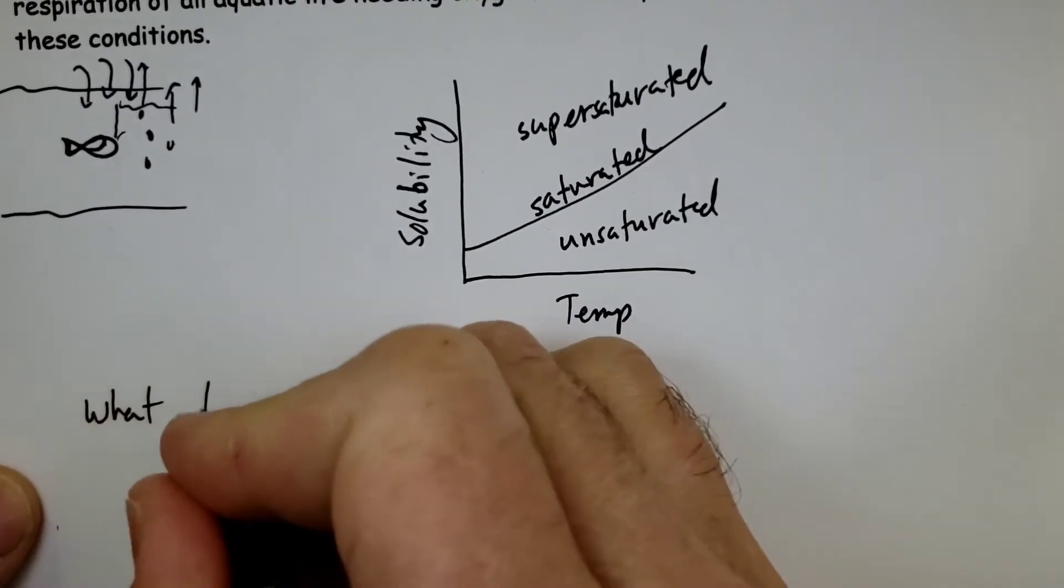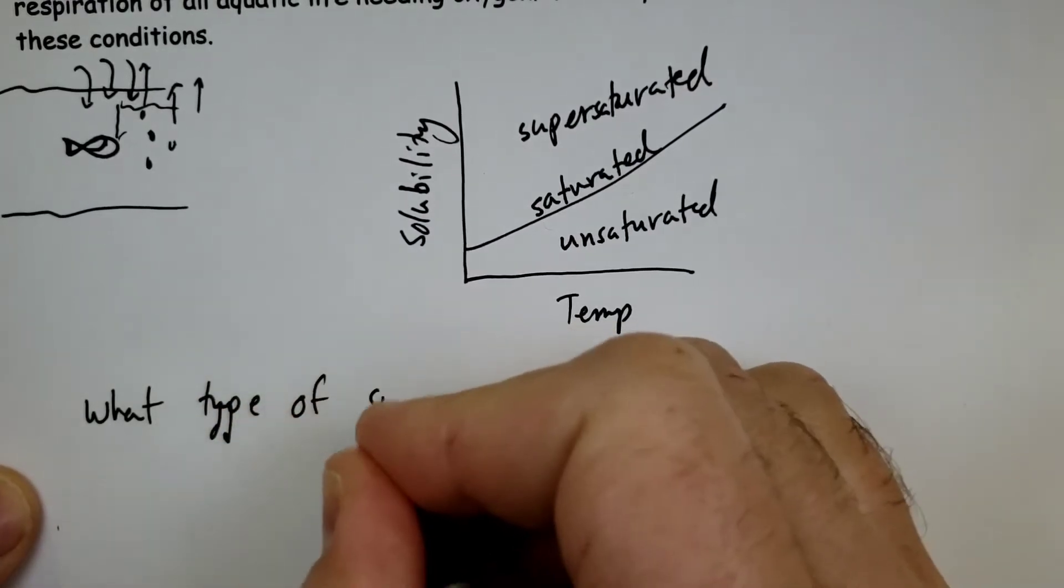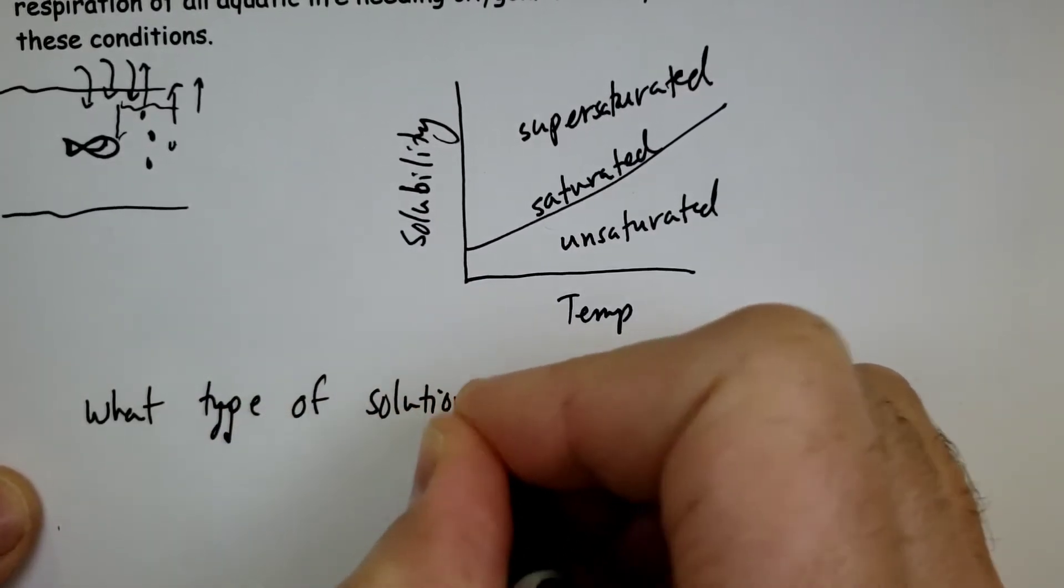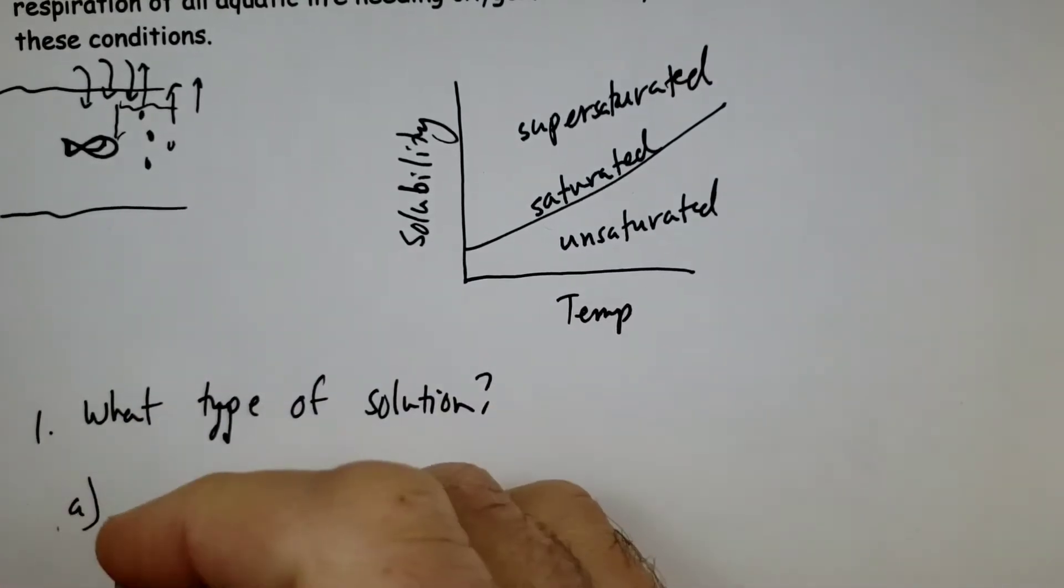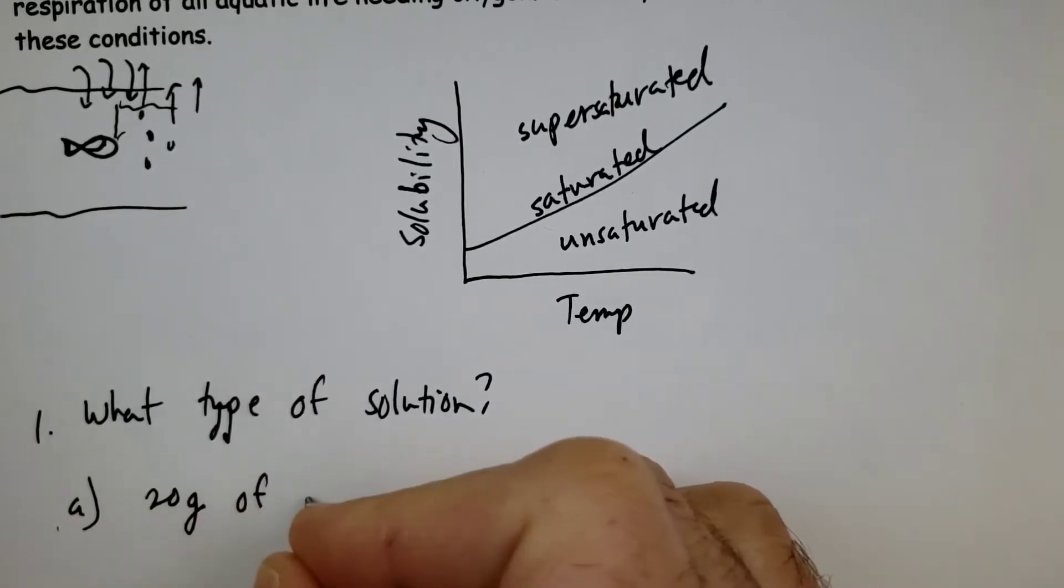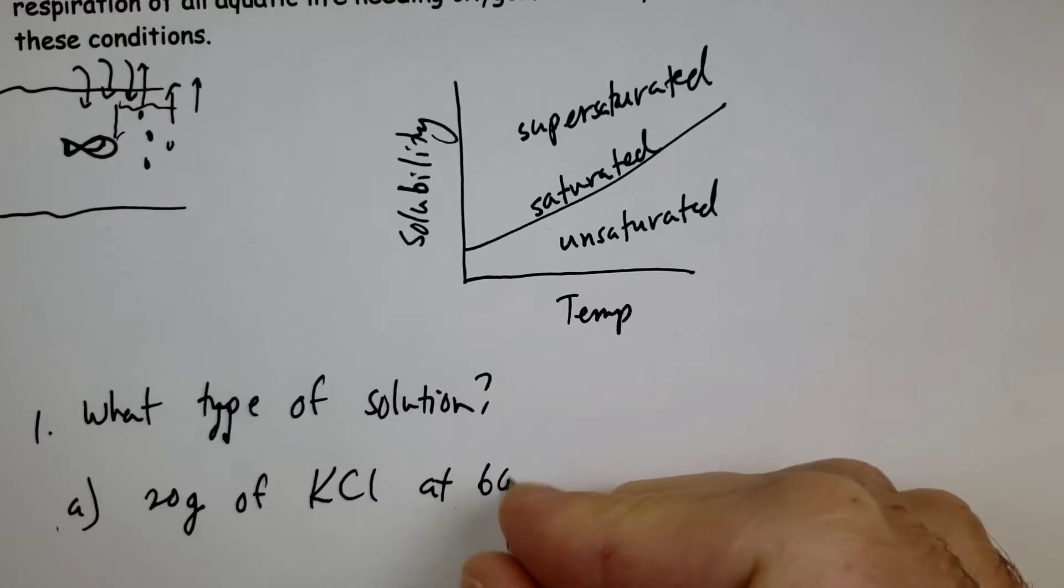So let's look at this. What type of solution? So let's call that number one. A, let's see here. Let's dissolve 20 grams of KCl at 60 degrees C.